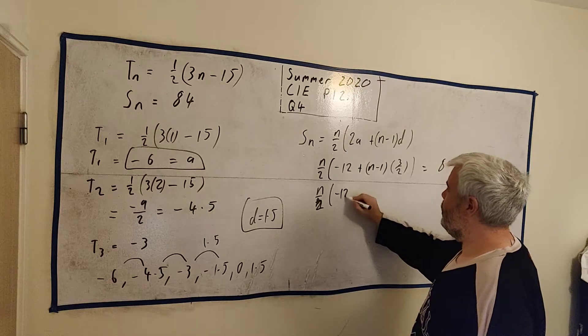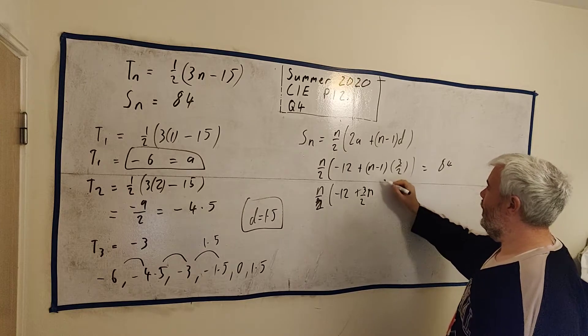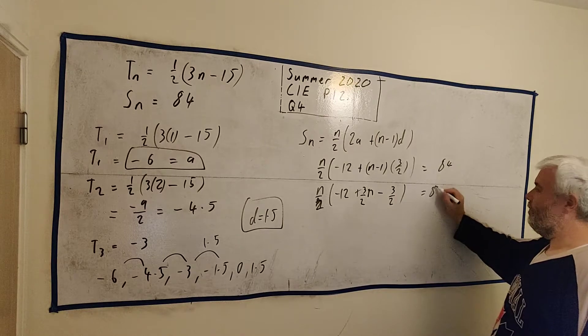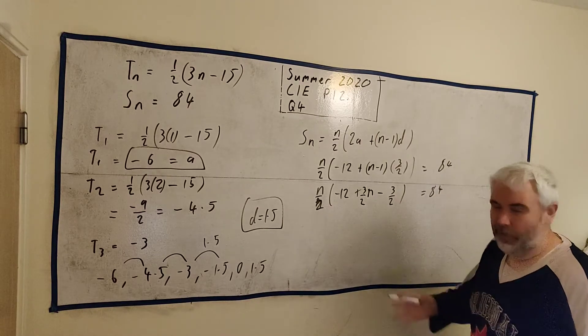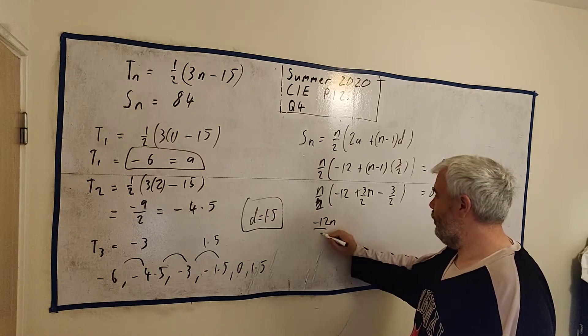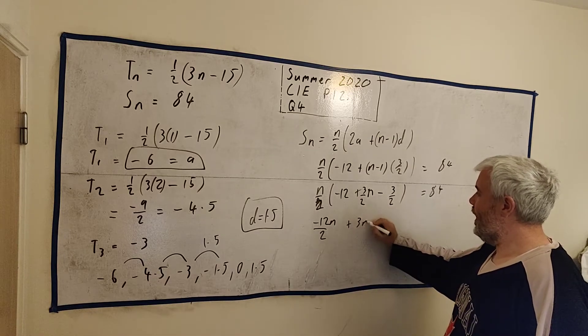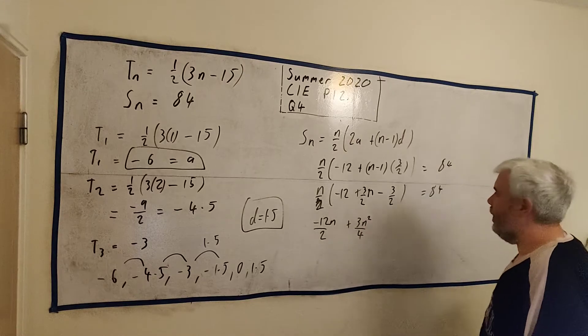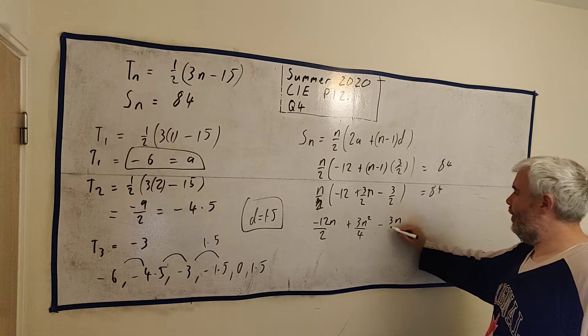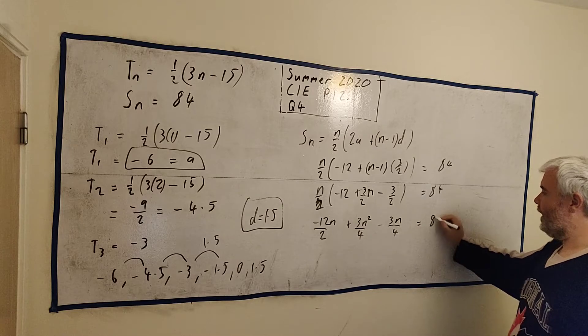N over 2. We got minus 12. We have 3 over 2 N, and we have minus 3 over 2. All equals 84. Let's multiply this guy in, and then we can get rid of these fractions. We got minus 12 N over 2. We get plus 3 N squared over 4. And we get minus 3 N over 4. This is just this multiplied by each of these. All equals 84.